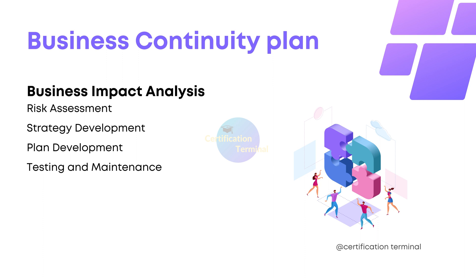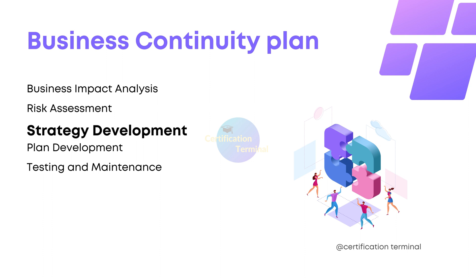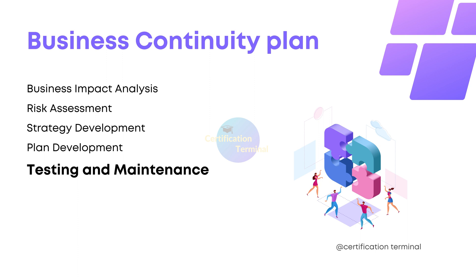Business Impact Analysis involves identifying critical business functions, processes, and systems. Risk Assessment evaluates potential threats, vulnerabilities, and risks that could affect business operations. Strategy Development involves outlining specific plans for different scenarios, including emergency response plans, recovery strategies, resource allocation, alternate work arrangements, and communication protocols. Plan Development involves documenting procedures, roles, responsibilities, communication methods, backup processes, and recovery steps for each critical function or system. Testing validates the plan's effectiveness, while Maintenance ensures its alignment with evolving business needs and risks.